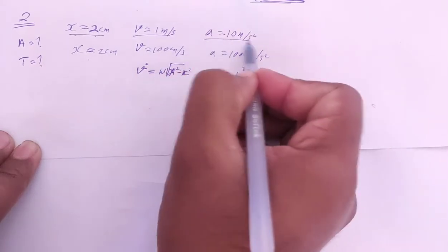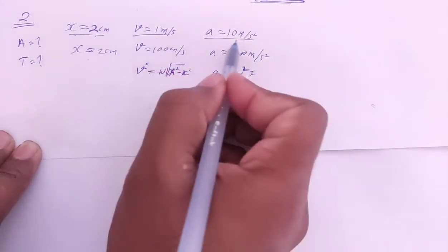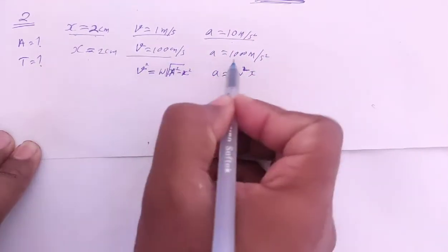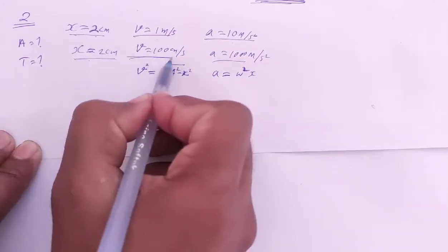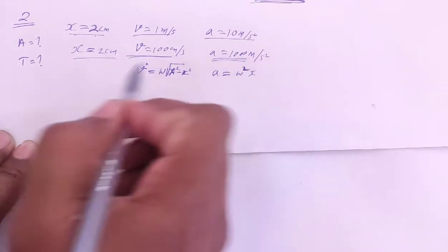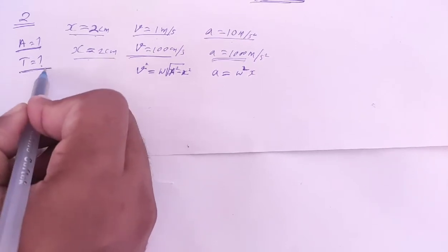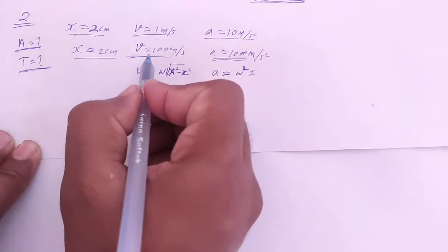Position is given, velocity is given, acceleration is given. We need to find amplitude and time period. Convert the position to centimeters.